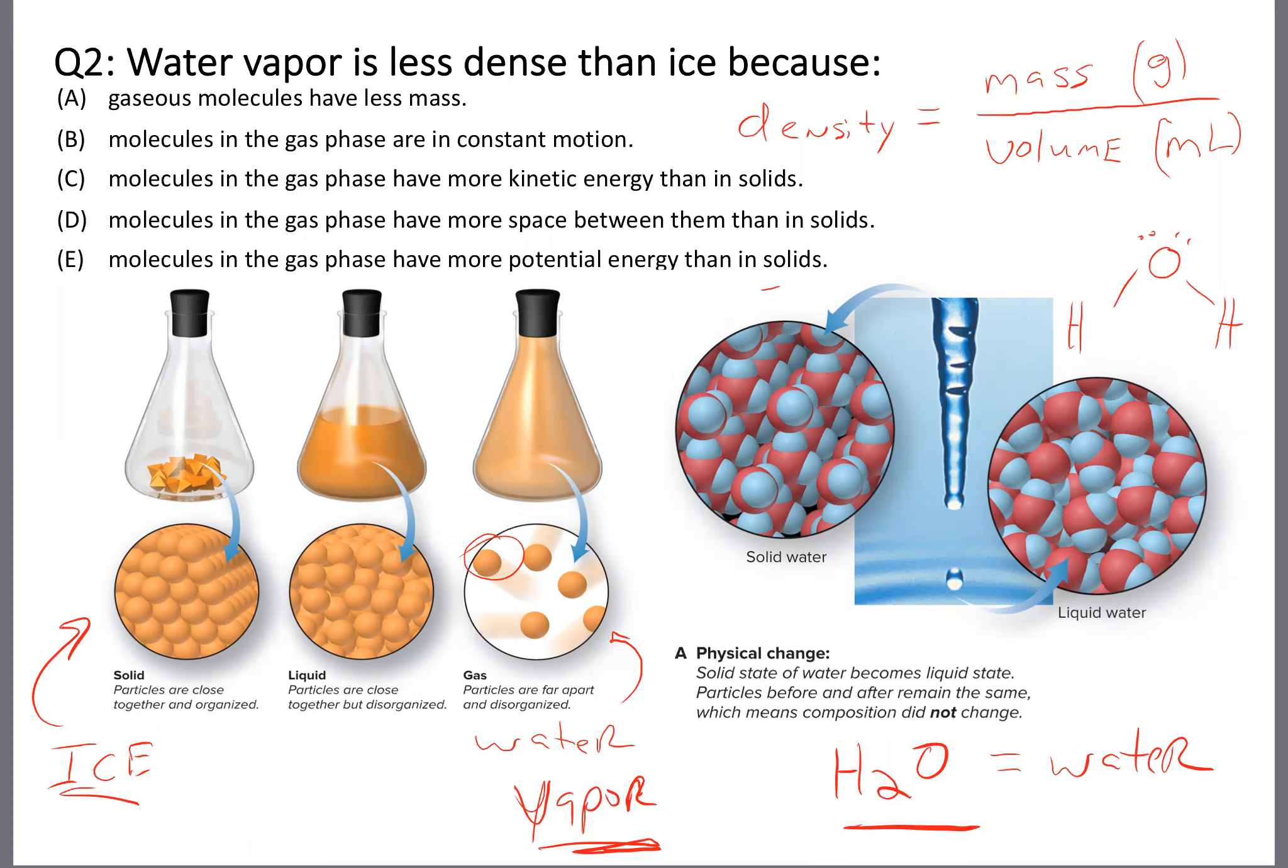Now, why is water vapor less dense? Is it because gas molecules of water have less mass? No, it's not. I just got through saying you can have gas phase water, you can have liquid phase water, you could have ice. If you've got water, you've got H2O - two atoms of hydrogen bonded to one atom of oxygen. It doesn't matter what form it's in, you've always got that arrangement of atoms. So if you're talking about one molecule, it doesn't matter if it's ice, liquid, or gas, they've all got exactly the same mass.